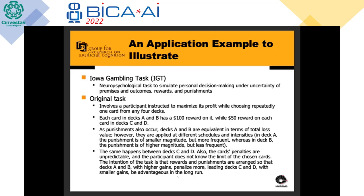In the paper, we use an example application to illustrate the use of the Mind Viewer. Our example is a quite simple application made with the Iowa Gambling Task. The Iowa Gambling Task is a neuropsychological task to simulate personal decision making under uncertainty of premises, outcomes, rewards, and punishments. The original task involves a participant instructed to maximize profits while choosing repeatedly one card from any of four decks.